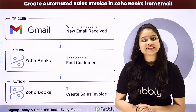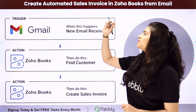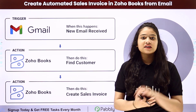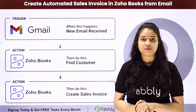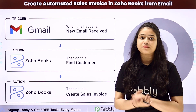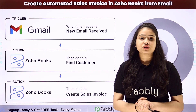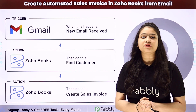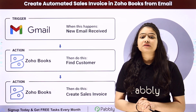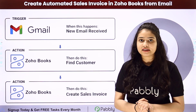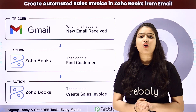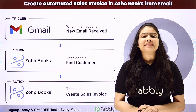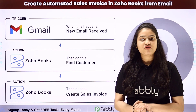Hello everyone, welcome back to Pabbly Connect. In this video, we are going to learn how to create automated sales invoices in Zoho Books from email. My objective is that as soon as I receive a new email on my Gmail account regarding customer details and the product purchased, automatically the customer should be searched in Zoho Books. If they are an existing customer, an invoice should be generated. If not, the customer should be created first, and then the invoice generated. We will set up this connection between Gmail and Zoho Books without any coding or programming skills using Pabbly Connect.